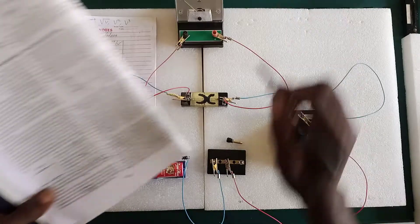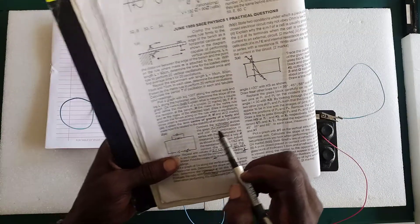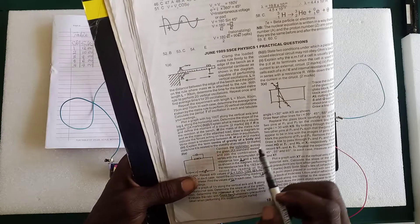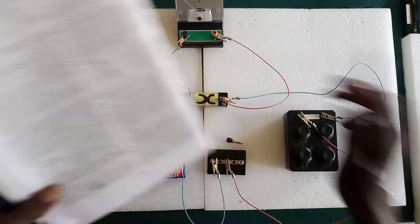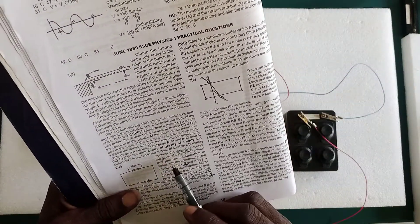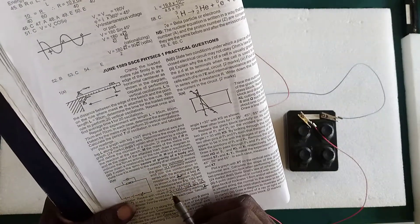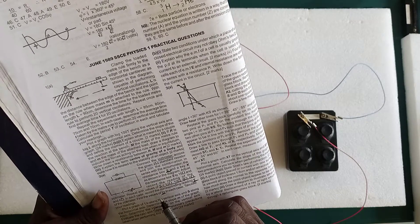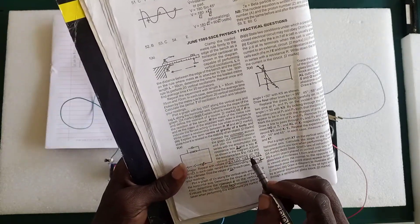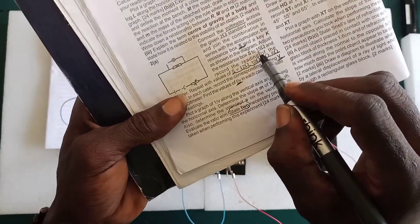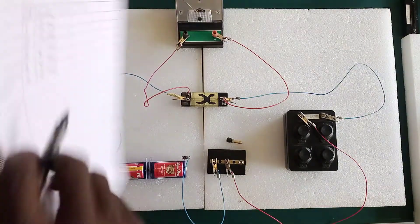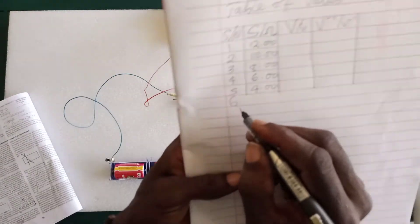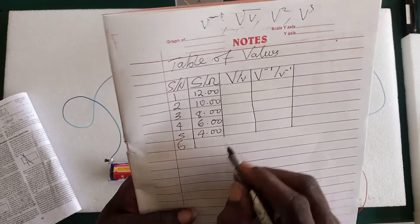The examiners ask us to connect — we have done all the connections. Connect a voltmeter across the resistor and join the combination in series — we have done all that. The resistance box is set. The first value here is 50 — look at it. We set the resistance box to 15 ohm as the first value. The table of values is going to have up to six values, so we extend it down.